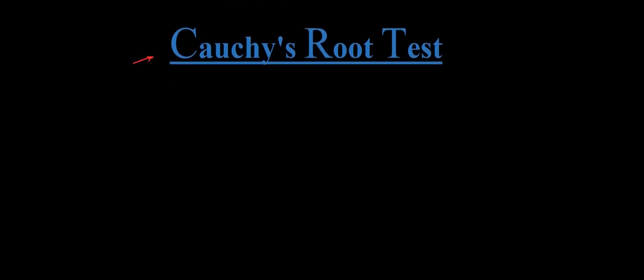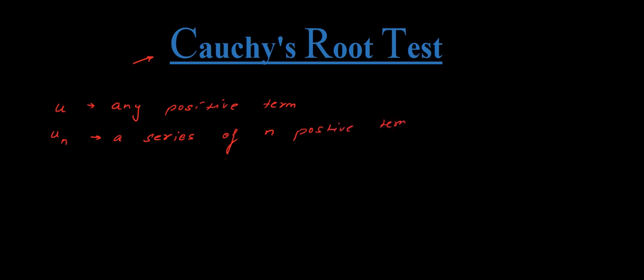Hello students, welcome to Saurav Sir's classes. Today we are going to discuss Cauchy's Root Test. In this type of test we require a few terms, so let us first define all our terms. Our first term is u, which is simply a representative of any positive term. Secondly, we have a similar term known as un — from this term you can guess that this is a series of n positive terms.